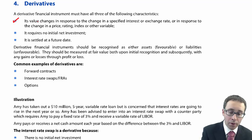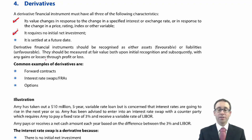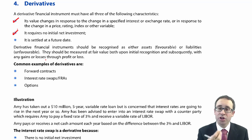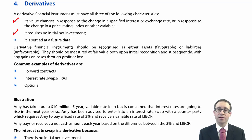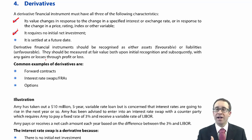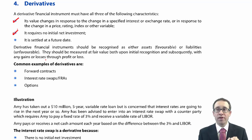The second important characteristic of a derivative is that it requires no initial net investment, or a very small investment. You can get a futures contract on oranges for a very minimal amount — you just sign up to the contract and pay a small fee at the start, which in terms of the overall value of the futures contract is regarded as negligible.